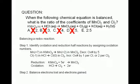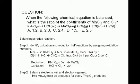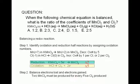Therefore, choice E must be the correct answer. 2 manganese 2 chlorides formed times 5 electrons gained for every manganese 2 chloride equals 10 electrons gained. 5 Cl2 molecules formed times 2 electrons lost for every Cl2 equals 10 electrons lost. Electrons lost equals electrons gained, which is what we want. Therefore, the coefficients of manganese 2 chloride and Cl2 must be in a 2 to 5 ratio. We can say that every time the reduction half reaction happens twice, the oxidation half reaction must happen 5 times. In the process, 10 electrons are transferred.